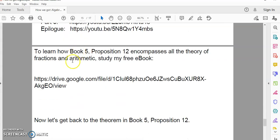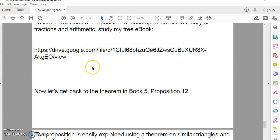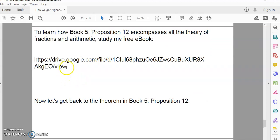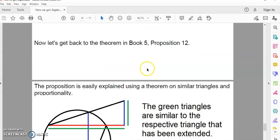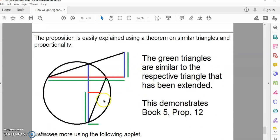So, this proposition encompasses all the theory of fractions, and it's all included in my free e-book. So, let's get back to proposition 12. And proposition 12 is really just all about similar triangles. It is based on similar triangles. You would have no fraction theory, no numbers, nothing without first having similar triangles. So, let's see how this works.